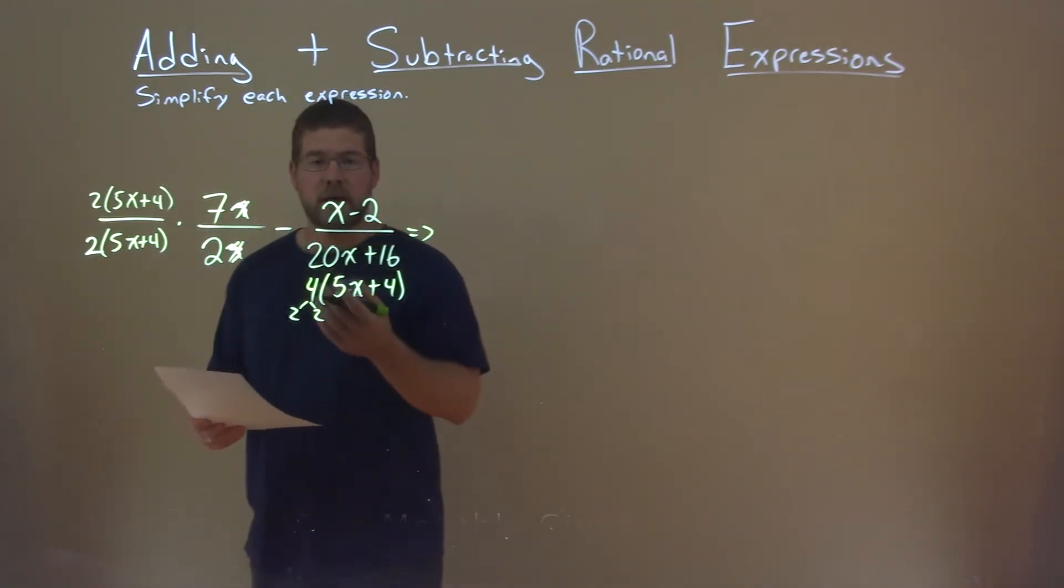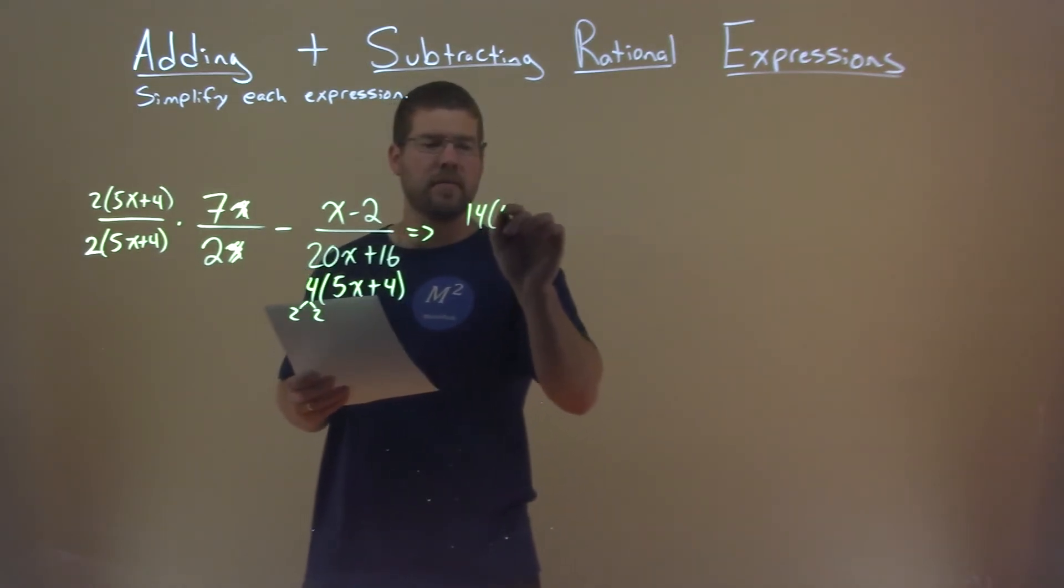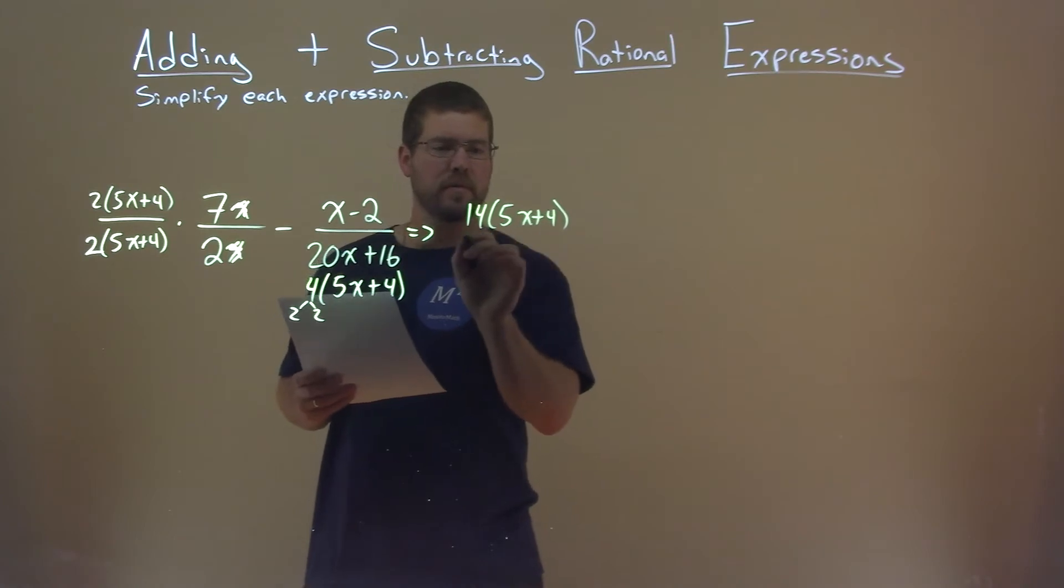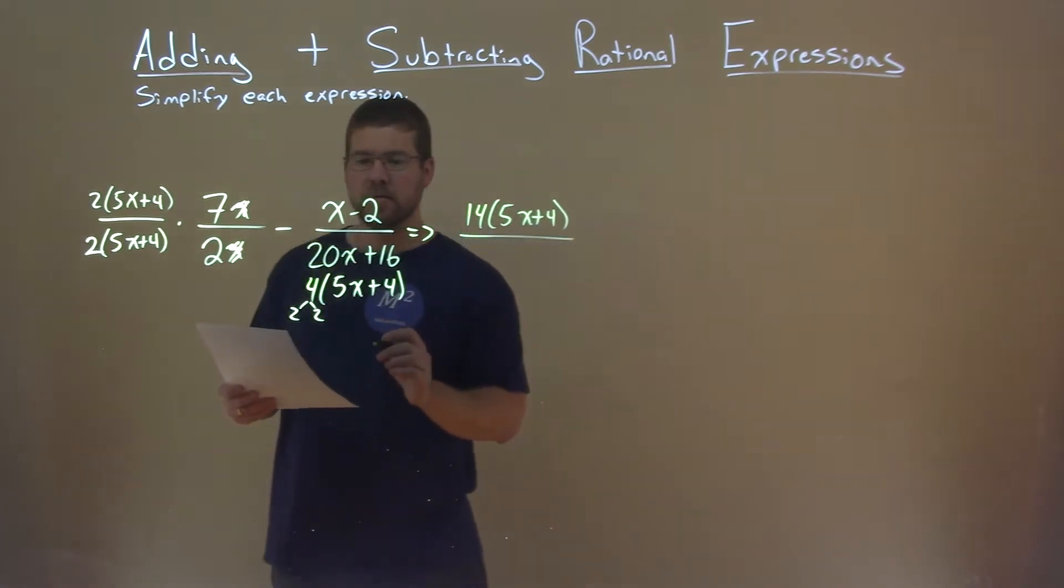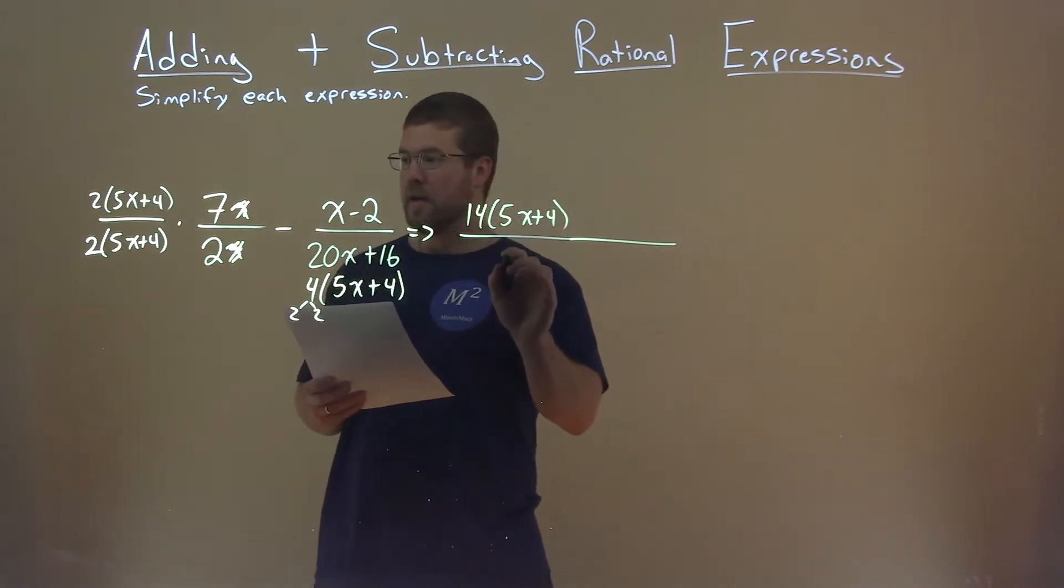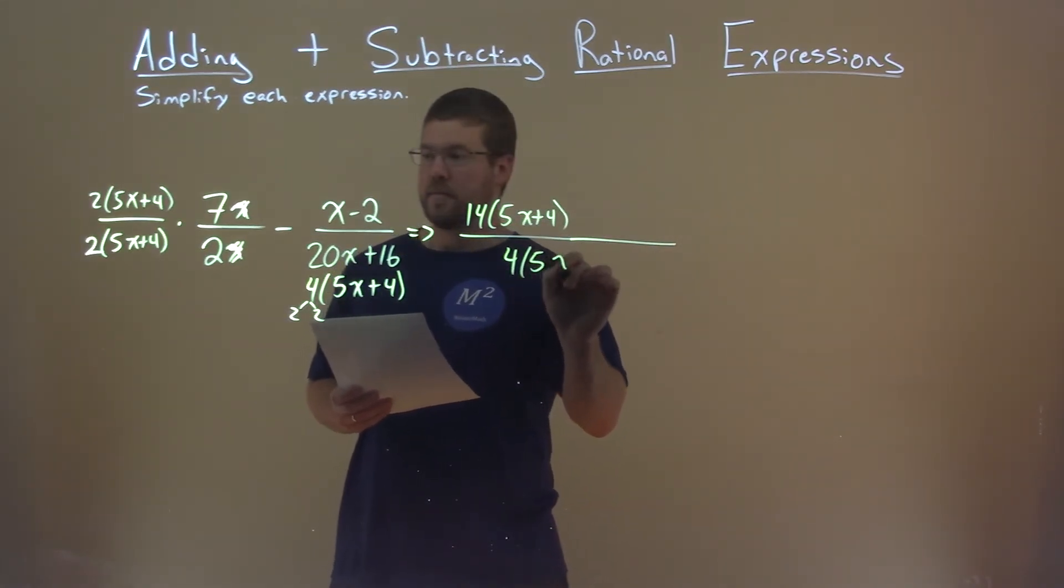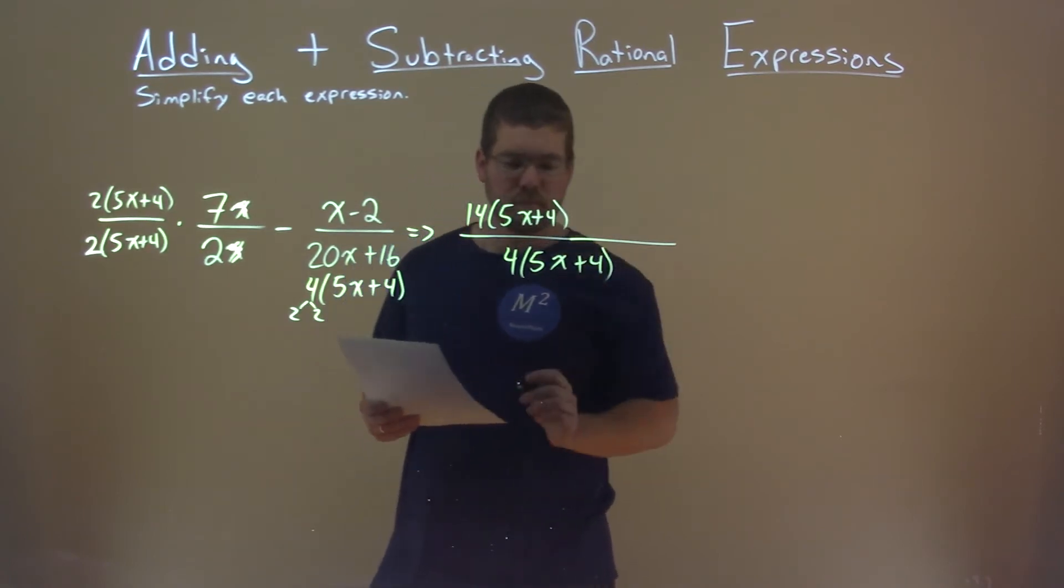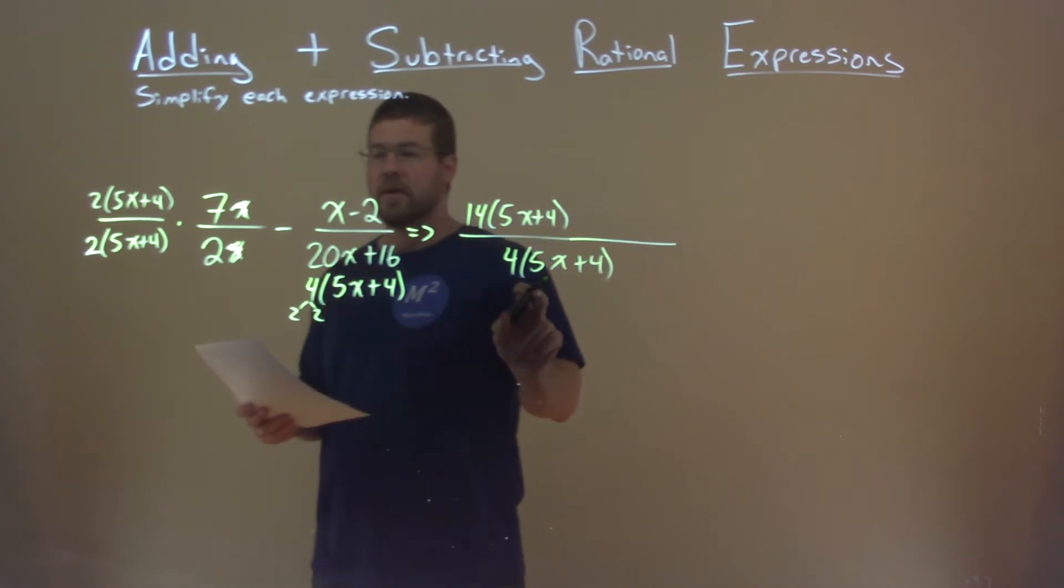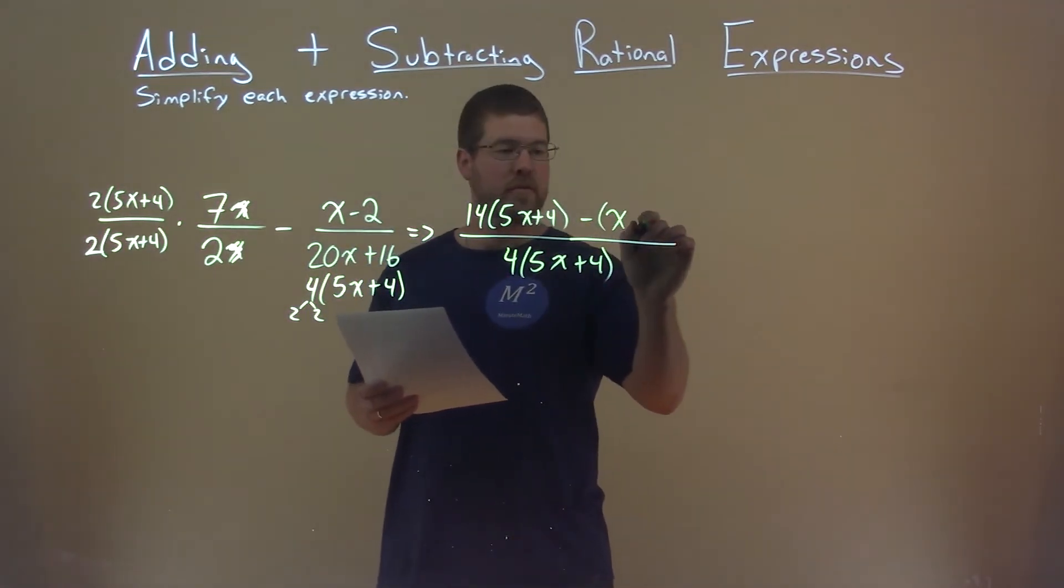So with doing that, what do we get? Well, 2 times 7 is 14, and we have that 5x plus 4 here, over the denominator, which is now going to be shared. We have that 4 times 5x plus 4, okay? So 4 times 5x plus 4 is going to be a common denominator. Then we just have that subtracting x in parentheses, make sure you don't forget it, minus 2.